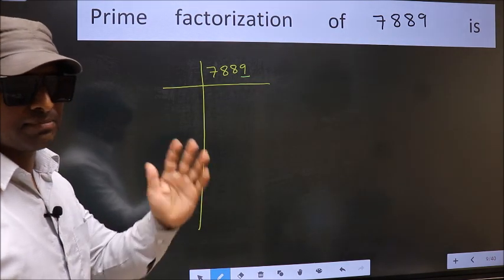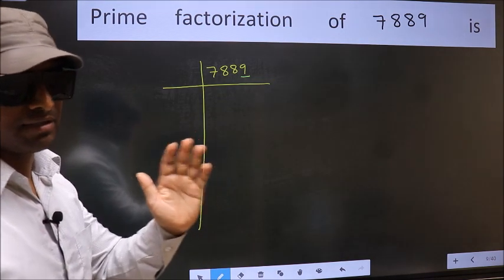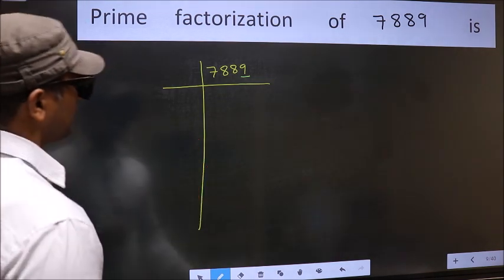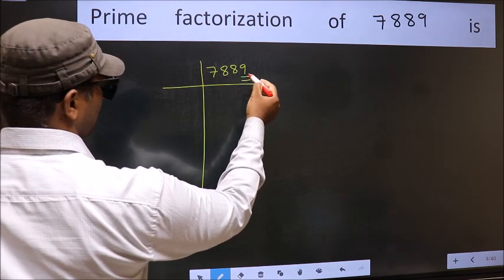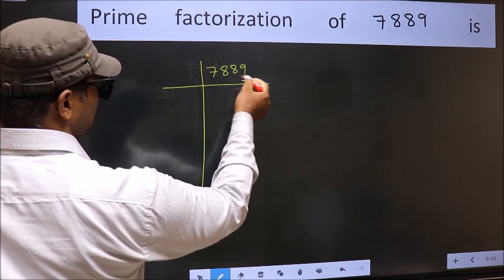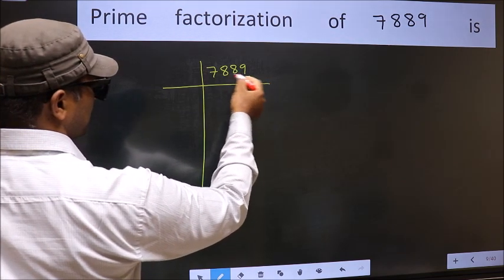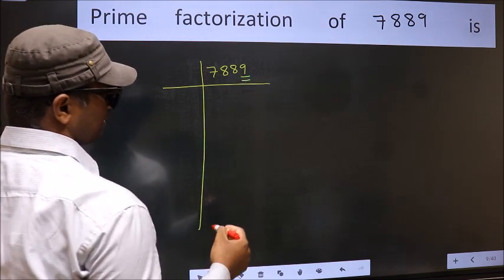Next prime number 5. The last digit is neither 0 nor 5, so this is not divisible by 5.